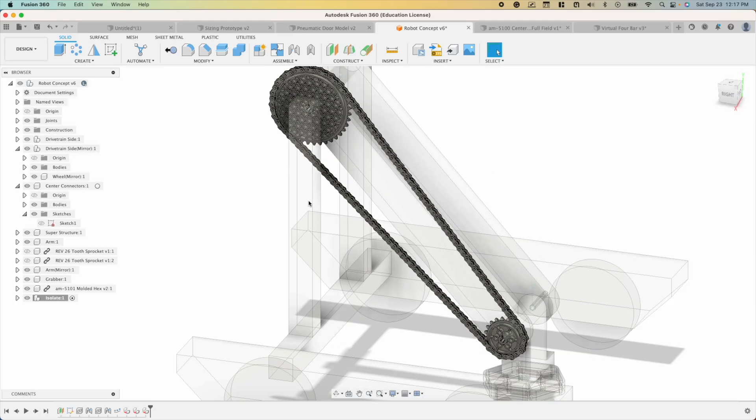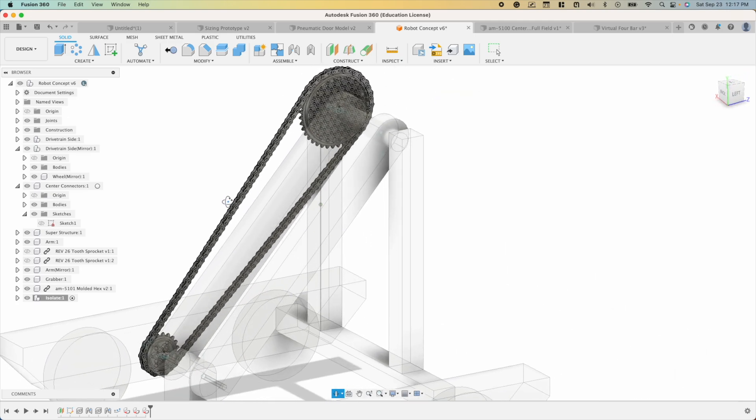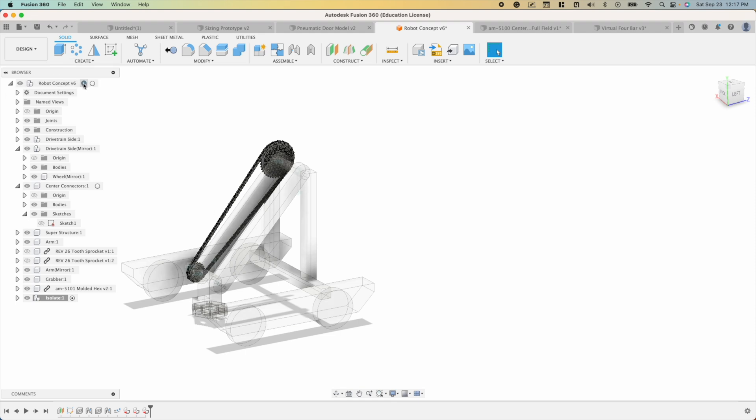And so from this, I chose the closest gear ratios that I could find that are available. In this case, on the rev, you see that there's a 40 to 20 tooth, which gets us pretty close to 0.46.